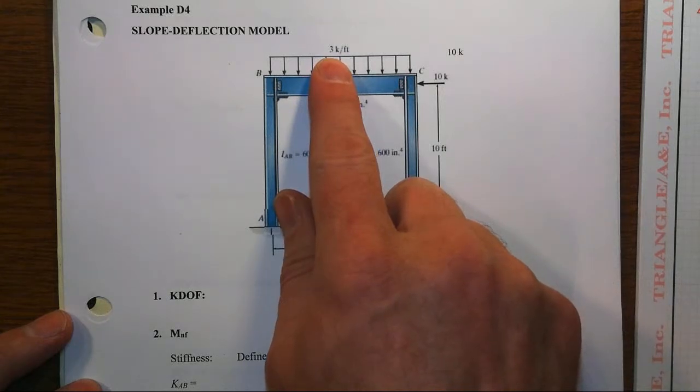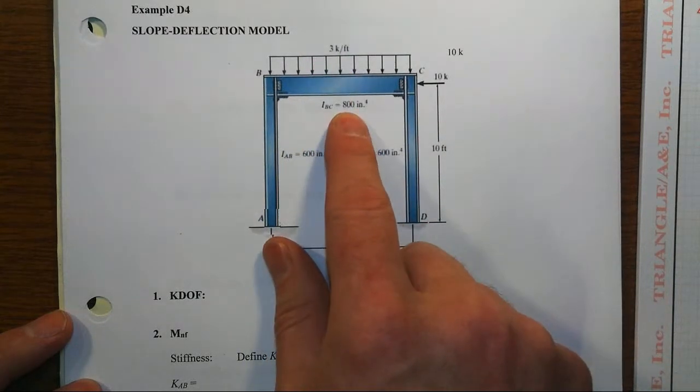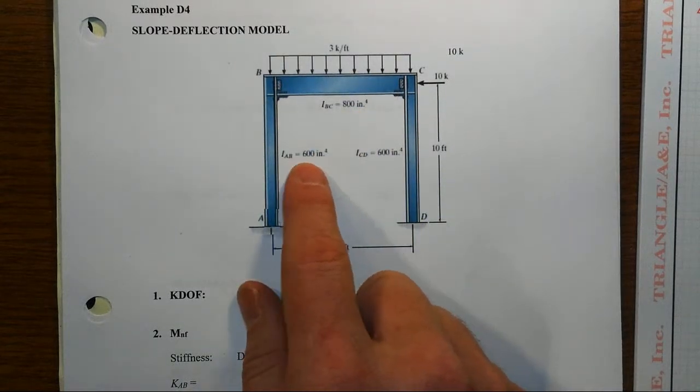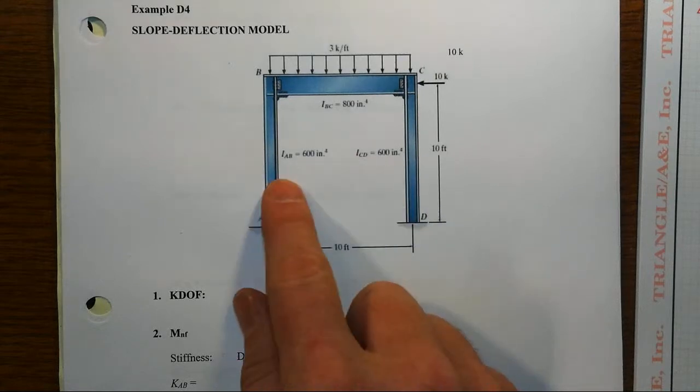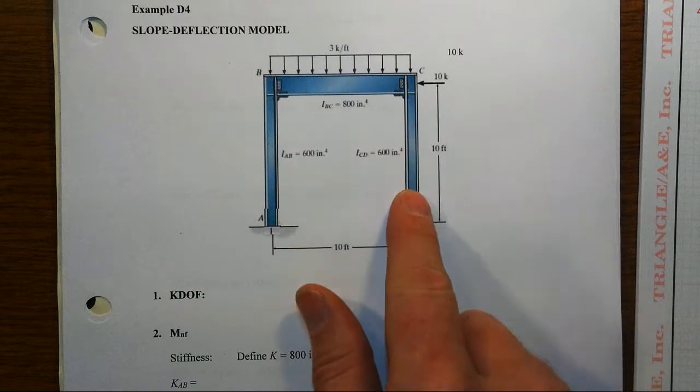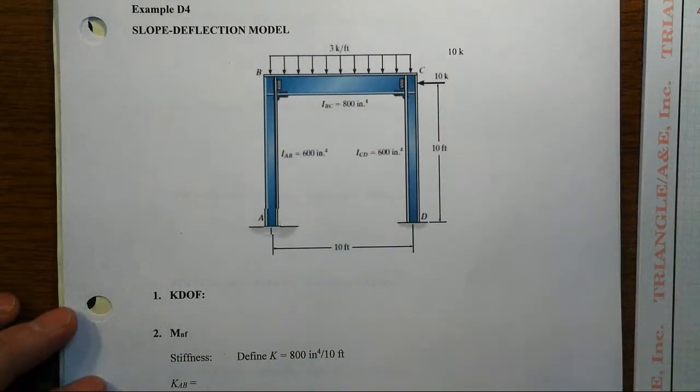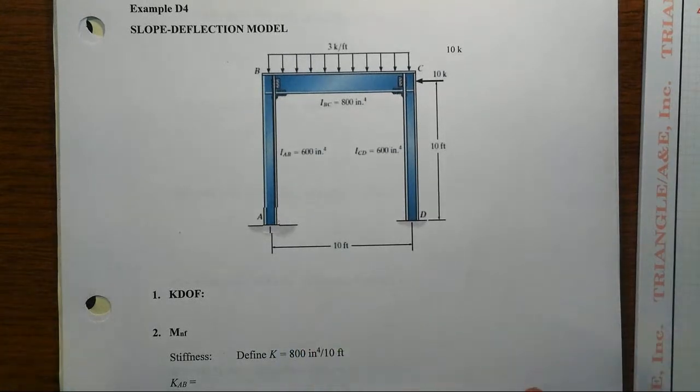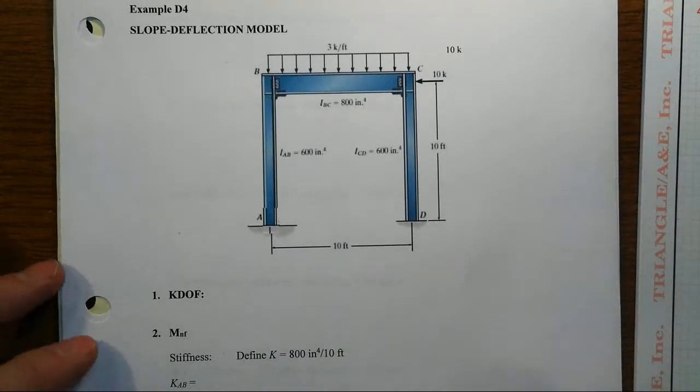It has a gravity load of 3 kips per foot. We've got the beam stiffness at 800 inches to the fourth, of course divided by L, and then the columns are identical at 600 inches to the fourth. We have a moment resisting frame, all steel, and we want to figure out what the reactions are, draw shear moment diagrams, all that good stuff.